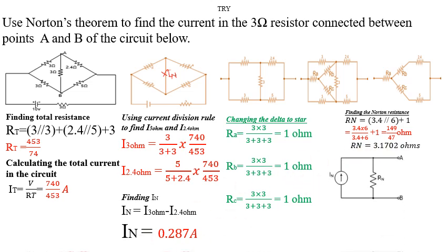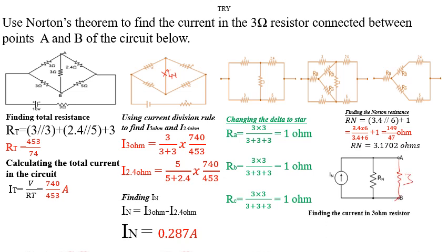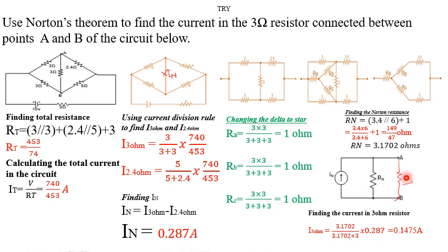After finding RN, we draw the Norton equivalent circuit. We then calculate the current through the 3-ohm resistor using current division — dividing the relevant resistance by the sum of all resistances and multiplying by IN — to get our final answer.